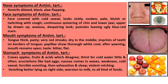After yawning, the mouth remains open. Taste is bitter and flat. The patient craves apples, fruits, and acids, which disagree. Thirst for cold water, little and often. Eructations like bad eggs. Nausea comes in waves with weakness and cold sweat. Forcible vomiting, then exhaustion and sleep. Violent retching. Vomiting better lying on the right side. Aversion to milk and all food.